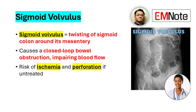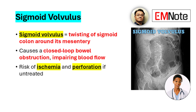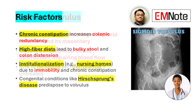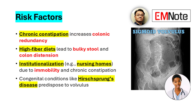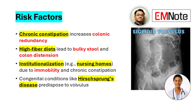Sigmoid volvulus occurs when the sigmoid colon twists around its mesentery, causing a closed-loop bowel obstruction. Risk factors include chronic constipation, high-fiber diets, institutionalization, and conditions like Hirschsprung's disease.